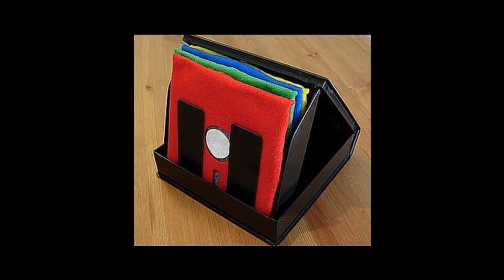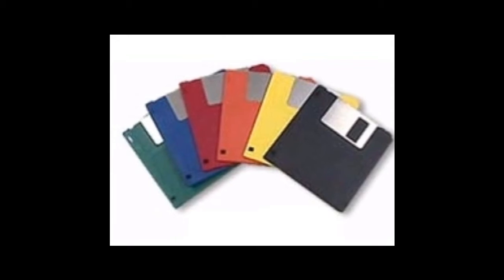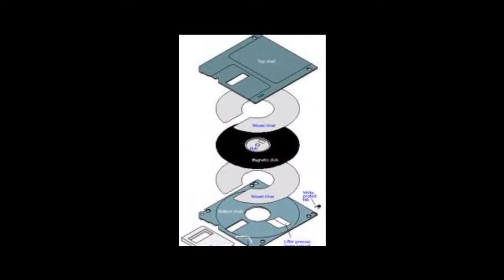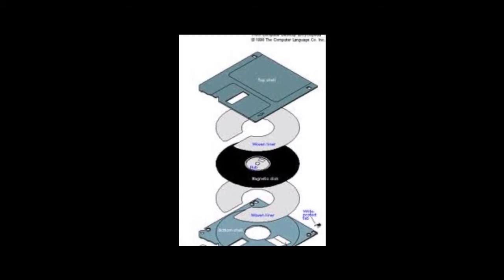Floppy disk. Invented in 1971 by IBM, the floppy disk is composed of a small circular magnetic metal piece surrounded by plastic. Newer models use a sliding metal door to cover a strip of magnetic tape. Floppy disks were typically able to hold anywhere from around 360 to 1,500 kilobytes.